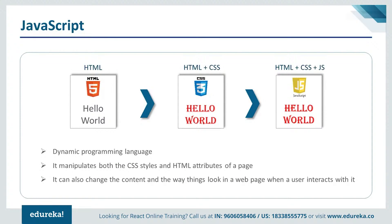JavaScript is a programming language predominantly used for client-side implementation. It initially started as a tool for client-side validation but has since evolved into a full-fledged language used for both client-side and server-side implementation. We have HTML for defining layouts, CSS for styling, and JavaScript for performing operations and manipulations on HTML and CSS. In web applications, JavaScript has a very strong role to play in configuring page content and handling events.